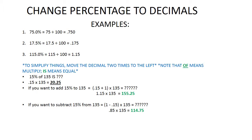If you want to subtract fifteen percent from one thirty-five, you go one minus point one five times one thirty-five, which equals point eight five times one thirty-five equals one hundred and fourteen point seventy-five.